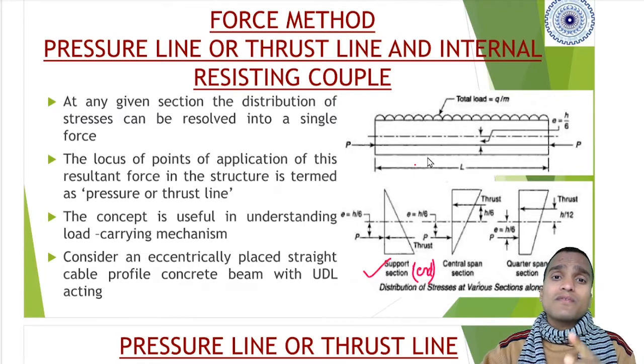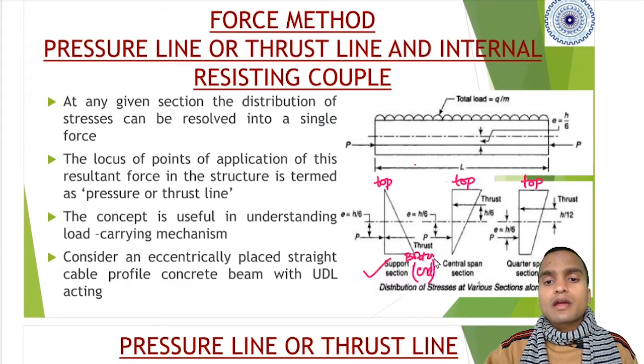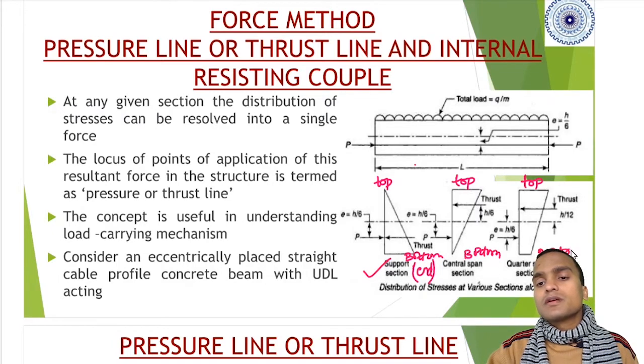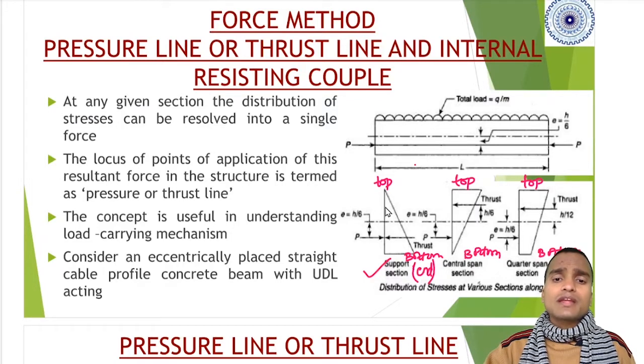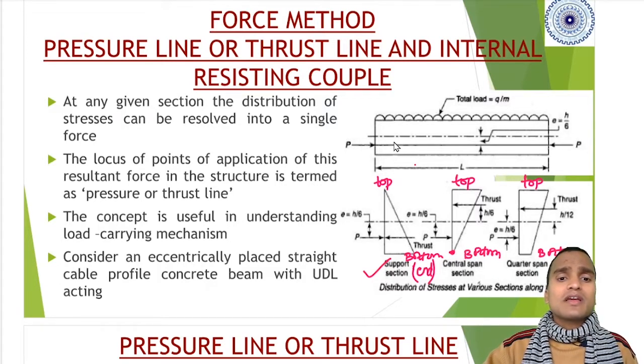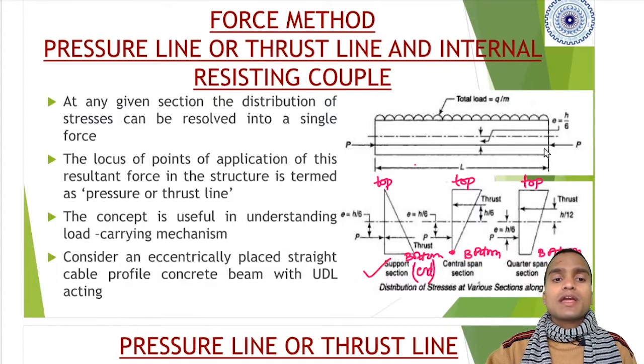All these curves you are seeing are distribution of stresses. We can draw the stress distribution at end section, mid section, or quarter section. In this case, it is triangular. At mid span, the bottom stress becomes zero. This is a special case where we have a rectangular beam with a straight cable profile placed at eccentricity e equal to h by 6 from the neutral axis.